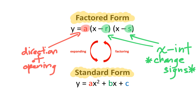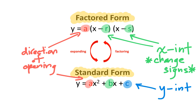In standard form, the variable a again represents the direction of opening. The variable b doesn't really tell you anything useful about the parabola, while the variable c tells you the y-intercept. You can convert factored form to standard form using the process of expanding, and you can also convert standard form back to factored form using factoring.